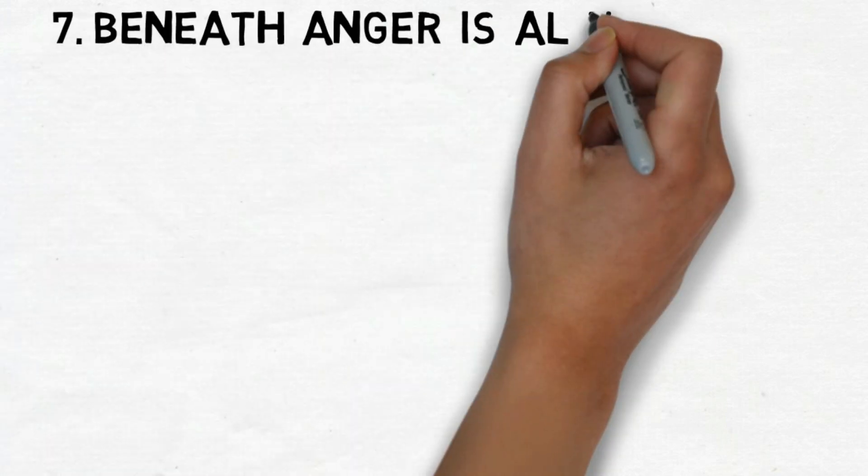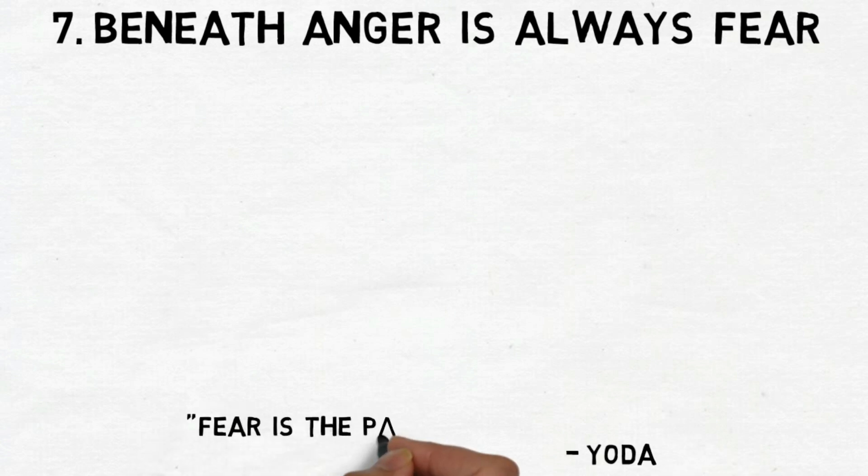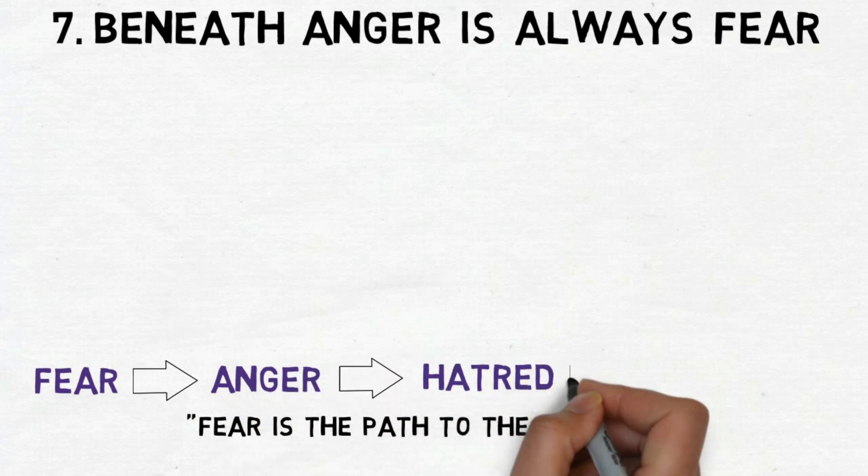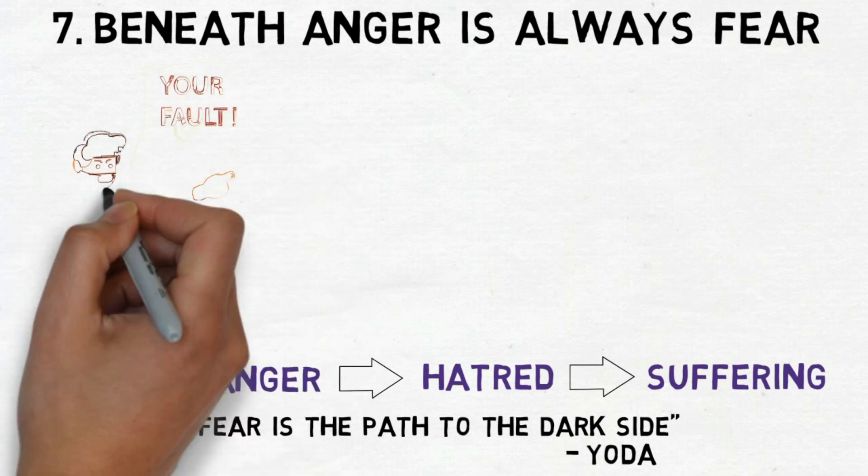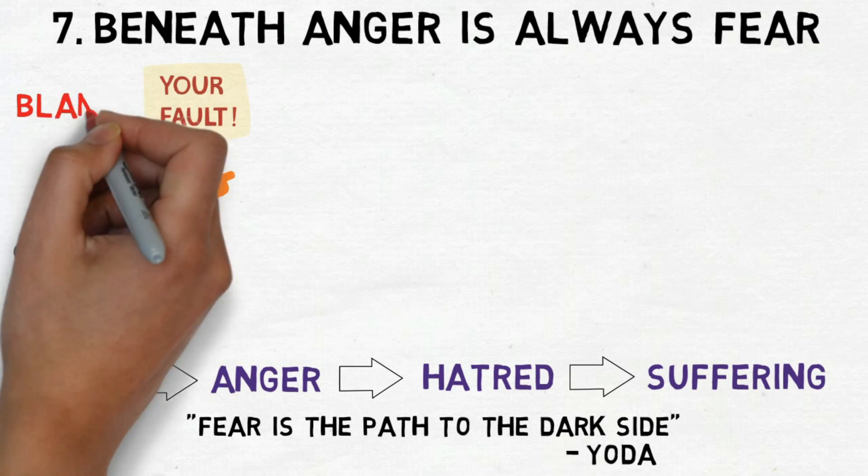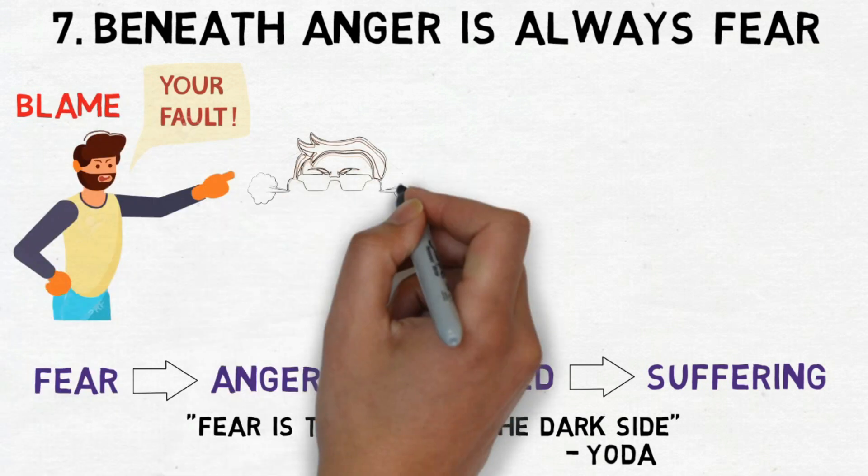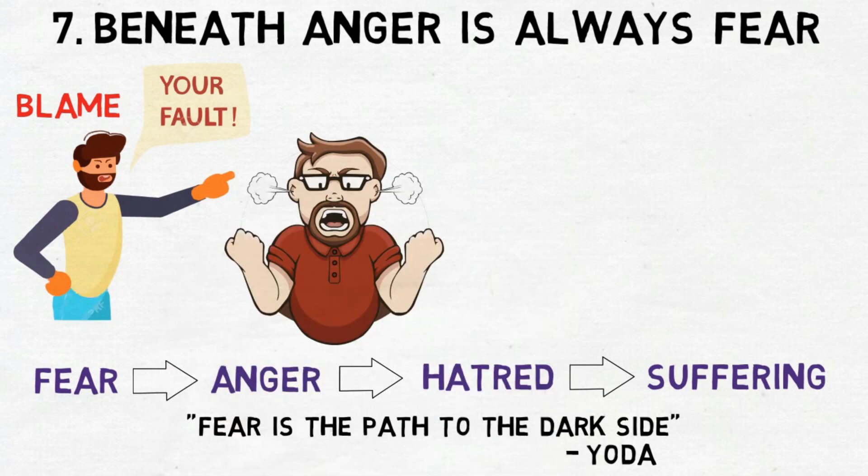Number 7. Beneath anger is always fear. In the words of the wise Yoda, fear is the path to the dark side. Fear paves the way to anger, which in turn breeds hatred, and hatred eventually results in suffering. When we go through tough times, especially for a long time, we usually first blame things or people outside of ourselves. If we look deeper beyond this feeling, we uncover that beneath our hatred lies a wellspring of anger, something we've held onto for a long time.